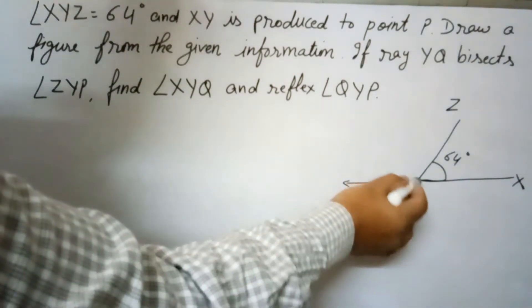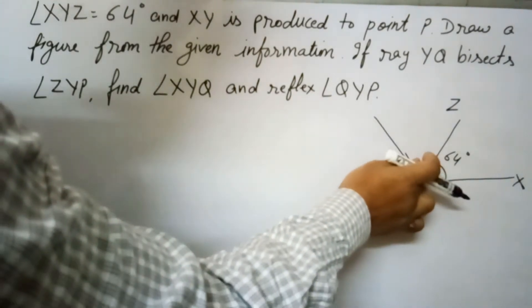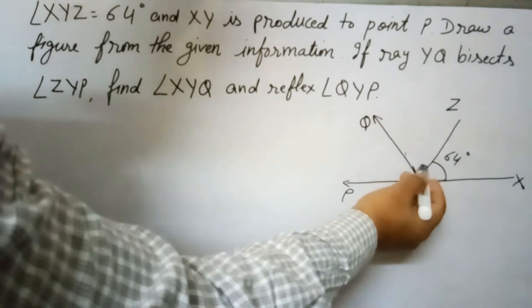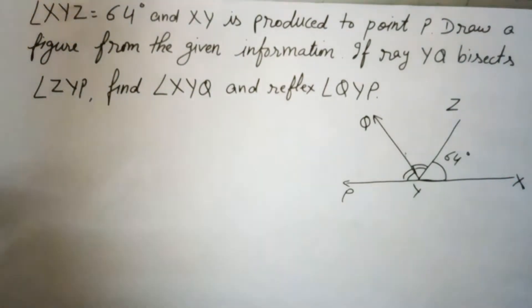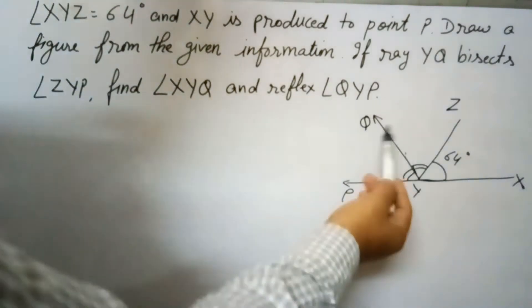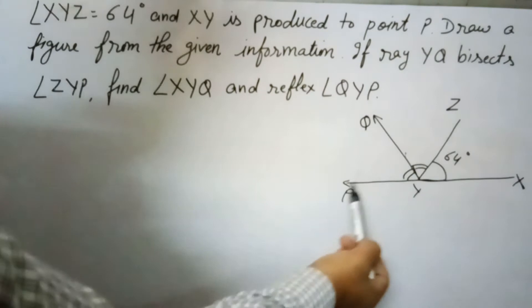This YQ bisects the angle, means these two angles are equal. Find angle XYQ and reflex angle QYP, the reflex angle of this.